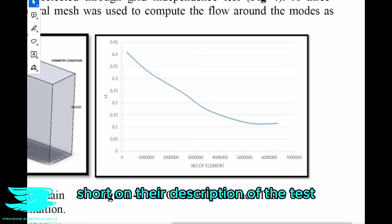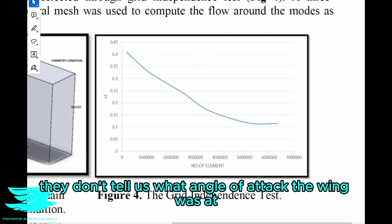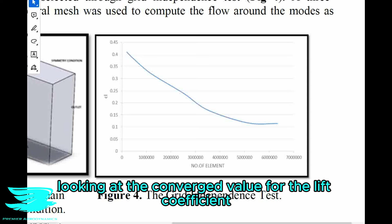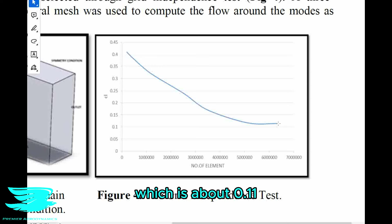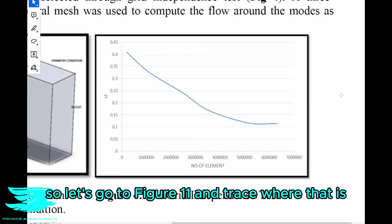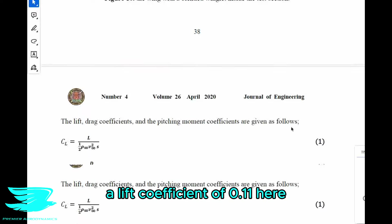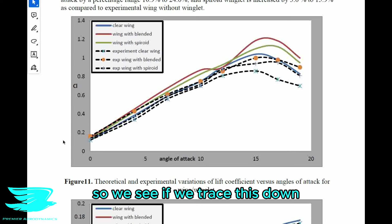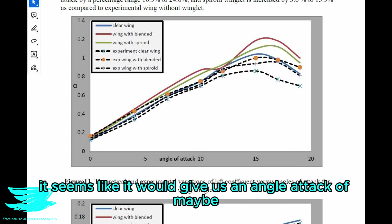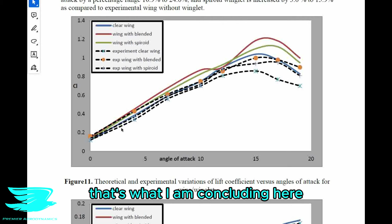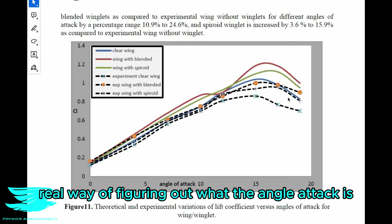They are quite short on their description of the grid independence test. They don't tell us what angle of attack the wing was at, or even the velocity, or even the wing type — whether it was the flat wing, the spiraled wing, or the winglet wing. Looking at the converged value for the lift coefficient, which is about 0.11, if we trace that onto the lift coefficient graph in figure 11, it seems like it would give us an angle of attack of maybe minus one degree. So let's say the angle of attack was minus one degree for this grid independence study.